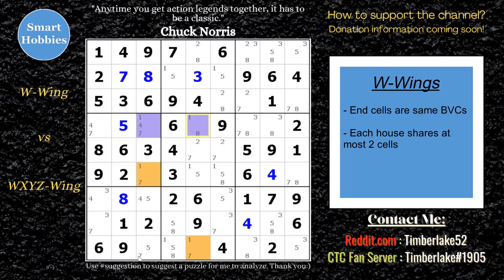So you eliminate a 7 right here, and then this becomes a 5 — you can move on with the cell. In most variants of a W-wing, you're going to have a strong link between the connecting cells. You have four cells total, but one of the digits in the bivalued cells is going to have a strong link connecting the beginning and end cell.